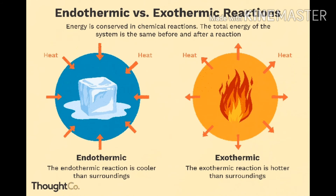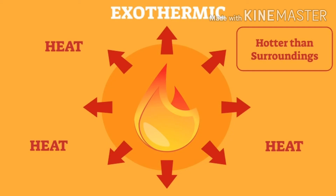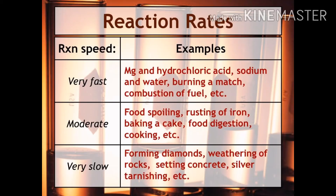There are two more types of chemical reaction depending upon whether heat is absorbed or evolved during a chemical reaction, and they are endothermic reaction and exothermic reaction. If the heat is absorbed during a chemical reaction, then it is called endothermic reaction. For example, formation of ice. Dissolution of sodium hydroxide in water is an example of exothermic reaction, in which heat is given out during the reaction.